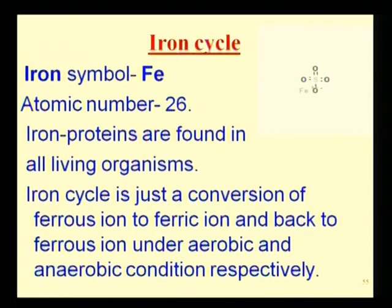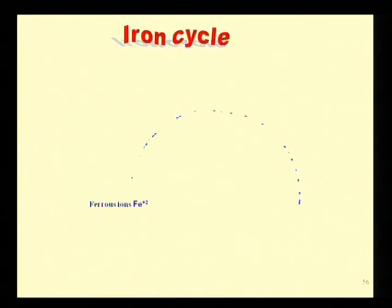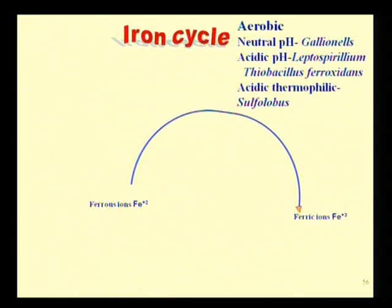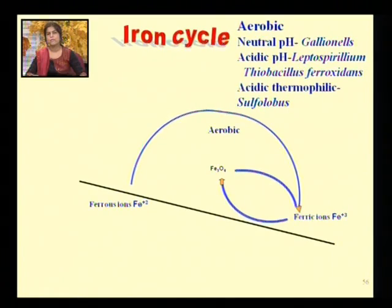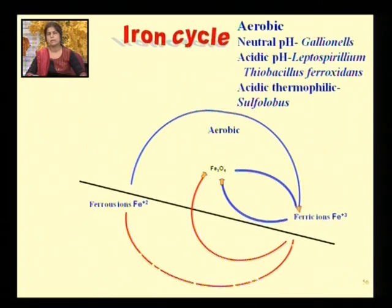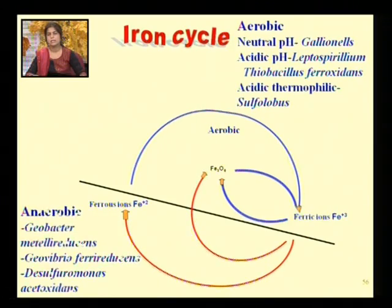Moving to the iron cycle: iron proteins are found in all living organisms. The iron cycle is essentially a conversion of ferrous iron (Fe²⁺) to ferric iron (Fe³⁺) under aerobic conditions, and back to ferrous iron under anaerobic conditions. In between, magnetites are also formed under both aerobic and anaerobic conditions.